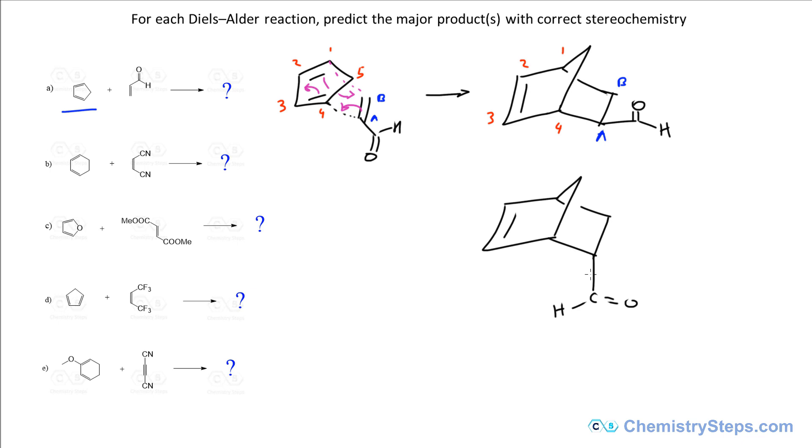Most of the time this product where the group is pointing towards this big ring, towards the double bond, so it's underneath this ring, this is the endo product. Endo product is going to be the major product. This is the exo product because this is pointing away from the ring. Most of the time this is going to be the minor product.